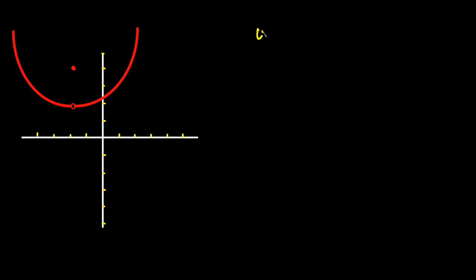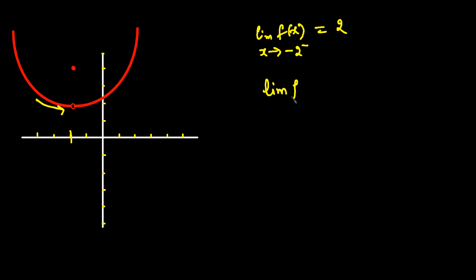In this example the points are on the left-hand side of zero, so the x-value is negative — x = negative 2. The limit of f of x as x approaches negative 2 from the left gives a function value of 2. The limit as x approaches negative 2 from the right-hand side also gives 2.